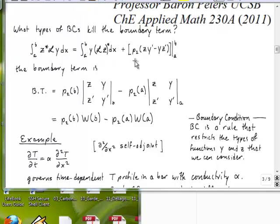This was the expression that we were working with. We had Z complex conjugate multiplied by LY integrated is equal to Y multiplied by LZ complex conjugated and integrated, and the only difference between these two integrals is the boundary term here.